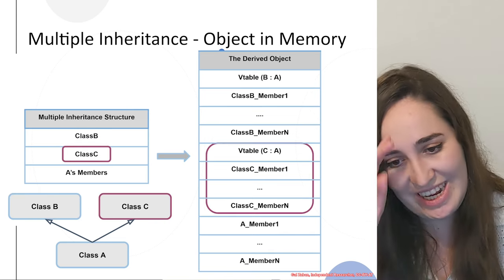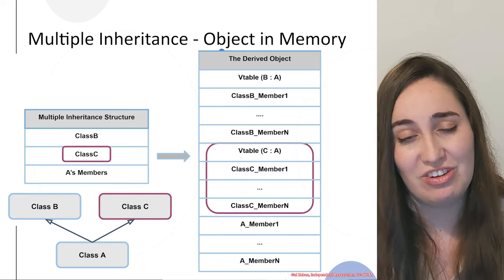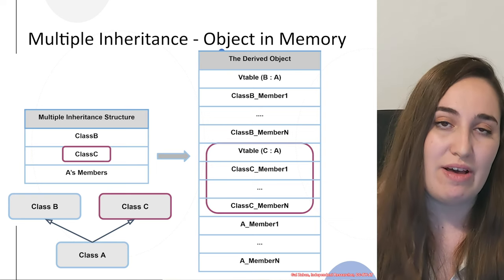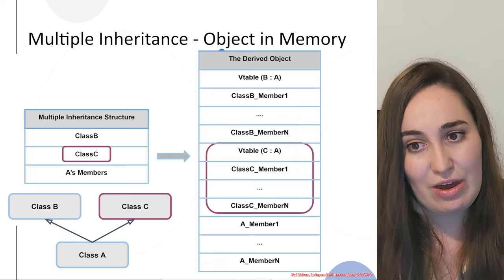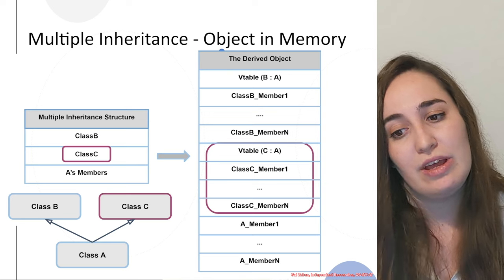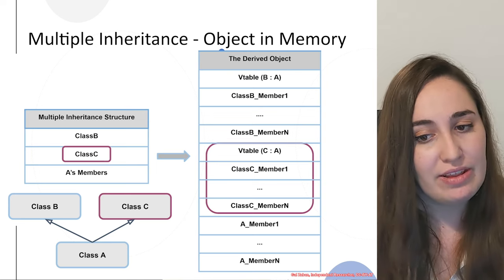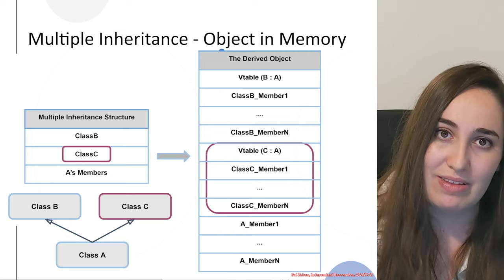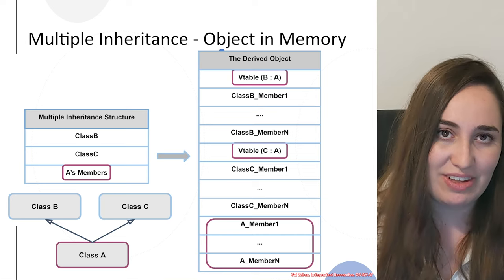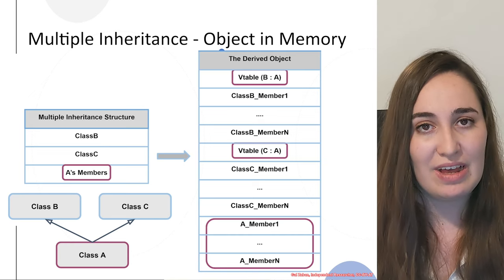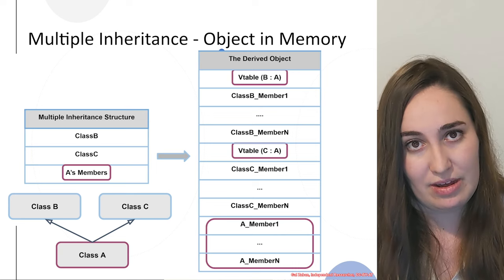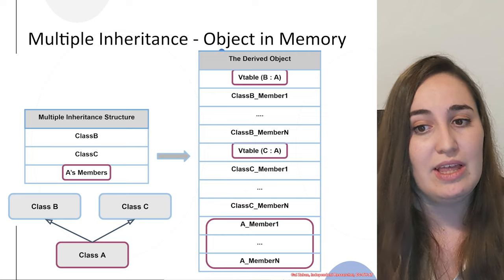After class B, we deal with the second part of the inheritance — the second inherited class, which is class C. The base class C also has a V table. In the object structure, you would first see a V table with the relevant functions from base class C and the relevant functions from derived class A. After the V table, you would see all the other members relevant for class C. Besides virtual functions, we also have the members created in class A stored in object memory.